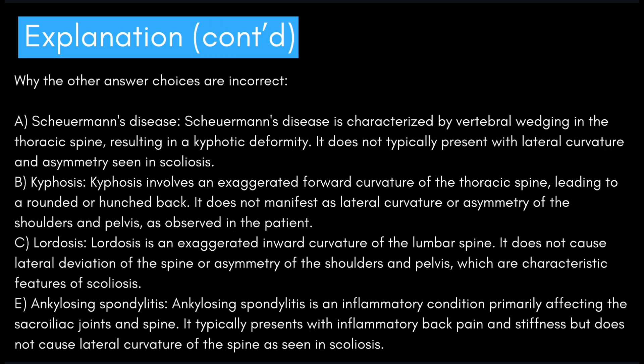The other answer choices are incorrect: Scheuermann's disease is characterized by vertebral wedging in the thoracic spine resulting in kyphotic deformity — it does not present with lateral curvature. Kyphosis involves exaggerated forward curvature of the thoracic spine and does not manifest as lateral curvature or shoulder/pelvic asymmetry. Lordosis is an exaggerated inward curvature of the lumbar spine and does not cause lateral deviation. Ankylosing spondylitis is an inflammatory condition affecting the sacroiliac joints and spine, presenting with inflammatory back pain and stiffness but not lateral curvature.